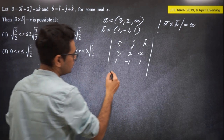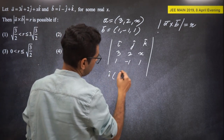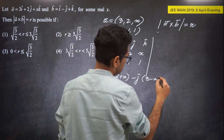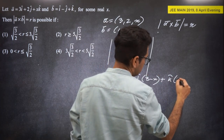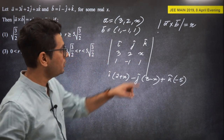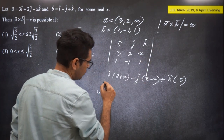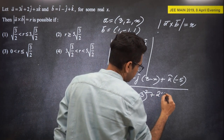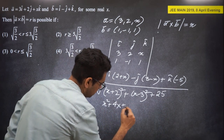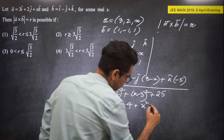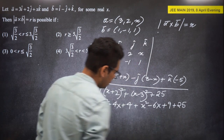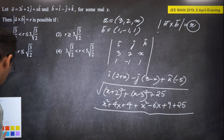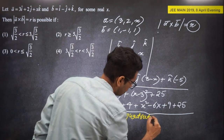Computing A×B with A = (2, X, 1)... wait, checking the question: A = (3, 2, X) for some real X. So A×B = det|i j k; 3 2 X; 1 -1 1| = i(2+X) - j(3-X) + k(-3-2) = (2+X, -(3-X), -5). The magnitude: |A×B| = √[(X+2)² + (X-3)² + 25].